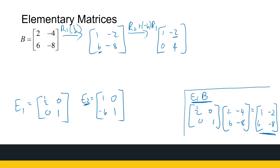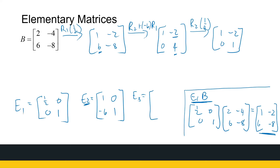I would like a leading one in the lower-right position, so we take row two and multiply it by a quarter, giving [1, −2; 0, 1]. The corresponding elementary matrix E3 is obtained by taking the identity matrix and multiplying row two by a quarter: E3 = [1, 0; 0, 1/4].